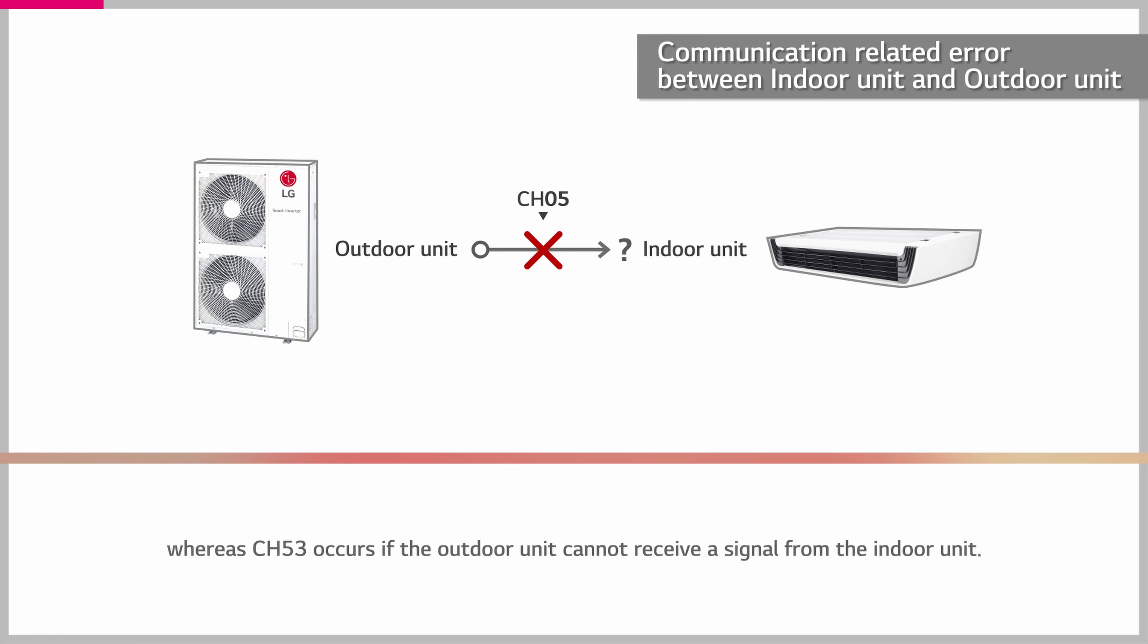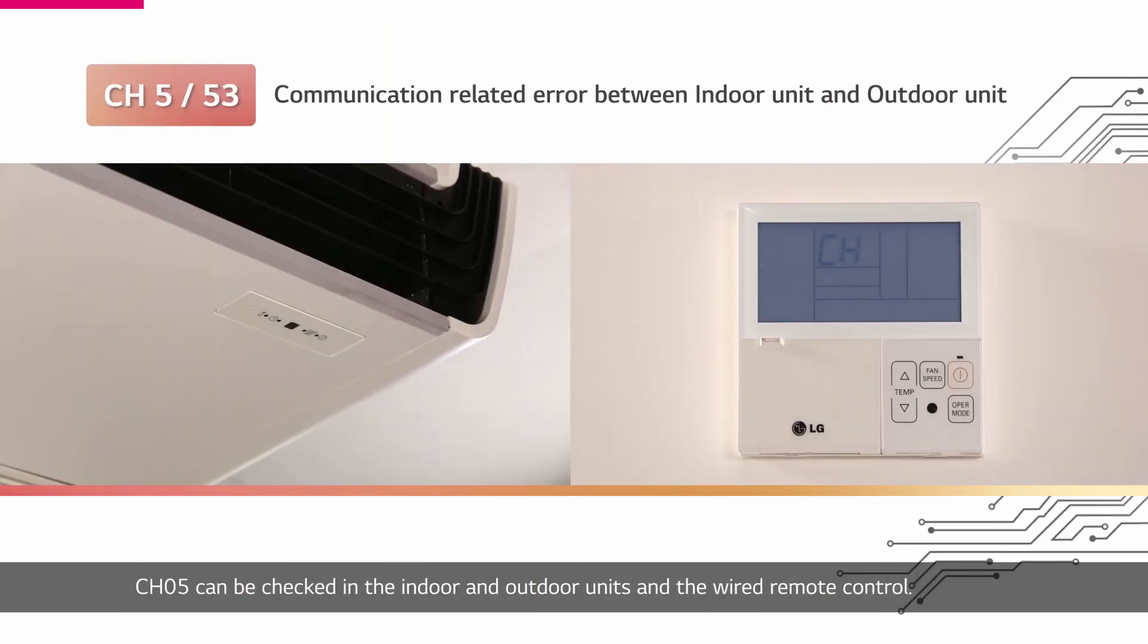whereas Channel 53 occurs if the outdoor unit cannot receive a signal from the indoor unit. Channel 5 can be checked in the indoor and outdoor units and the wired remote control.